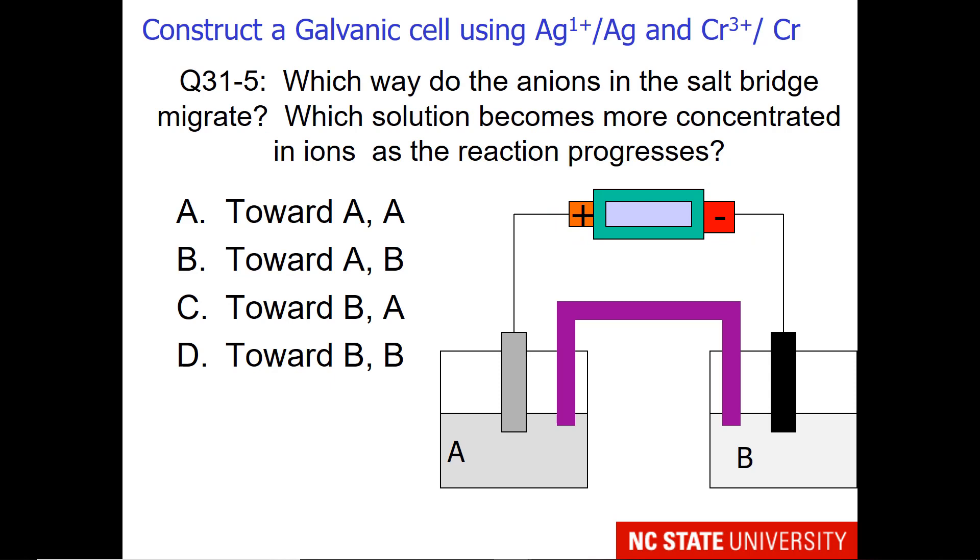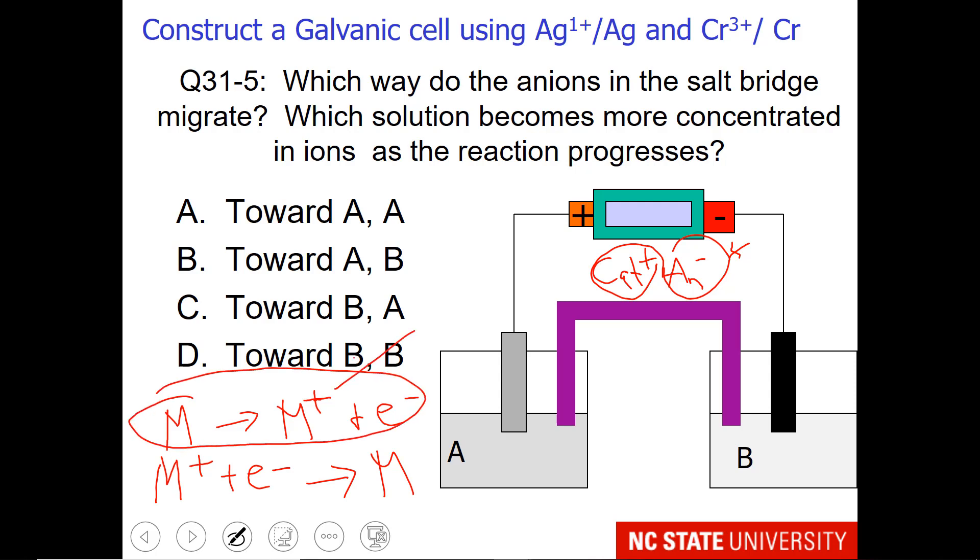Your last question is, which way do the anions in the salt bridge migrate? So of course I haven't told you what's in the salt bridge, but it's some cation that's positively charged and some anion that's negatively charged. We want to know which way do the anions migrate. Last is, which solution becomes more concentrated in ions as the reaction progresses? Remember that on one side we typically go from a metal to an ion and electrons, and on the other side we go from an ion plus electrons to a metal. I really am asking you, which side are we making ions on instead of reacting the ions away?